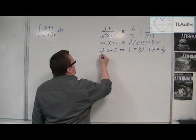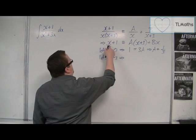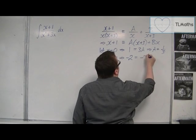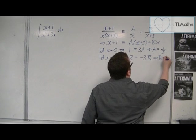We're then going to choose x to be minus 3 to get rid of that bracket. And so we'd have minus 3 plus 1, which is minus 2. That bracket is 0, so we're going to have minus 3b. And so b would have to be 2 thirds.